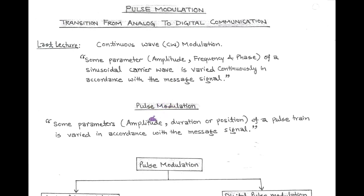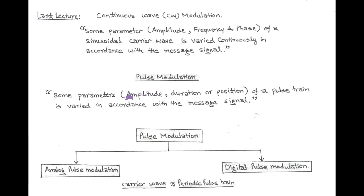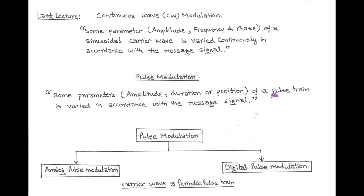In pulse modulation, we consider a train of pulses as a carrier signal. And the parameters like amplitude, duration, or position of the pulse train are varied in accordance with the message signal. So the definition of pulse modulation is: the parameters of the pulse train such as amplitude, duration, or position vary in accordance with the message signal. Then the process is called pulse modulation.